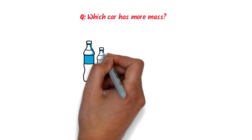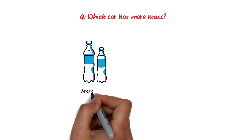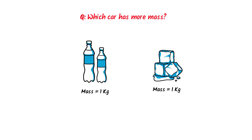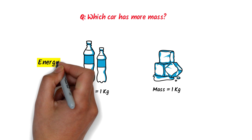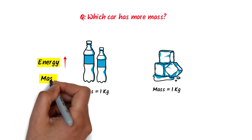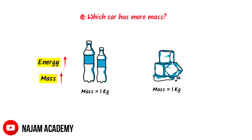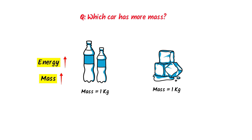Thirdly, consider 1 kg of water and 1 kg of ice. Which has more mass? 1 kg of water has more mass than 1 kg of ice, because 1 kg of water possesses more kinetic energy than 1 kg of ice. Therefore, using E equals mc squared, we can understand the mass-energy relationship of objects and the universe.